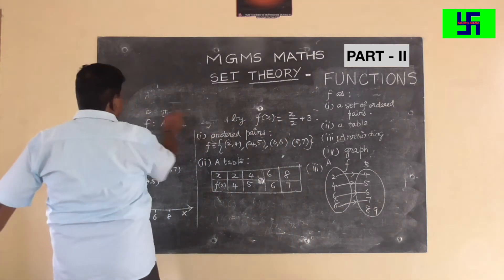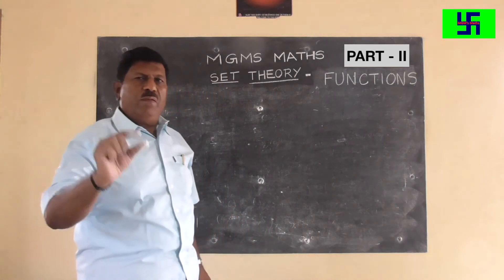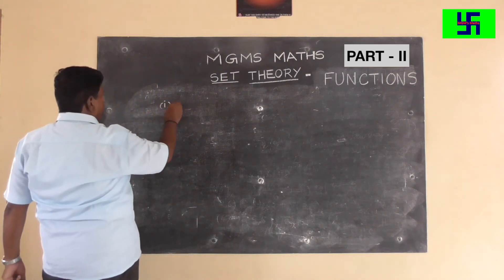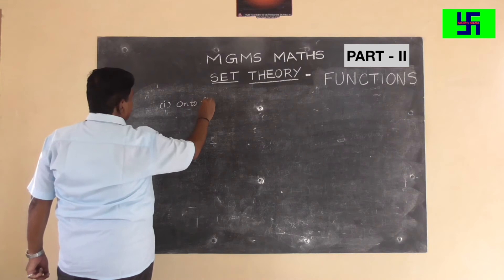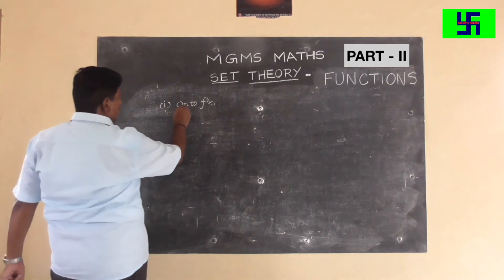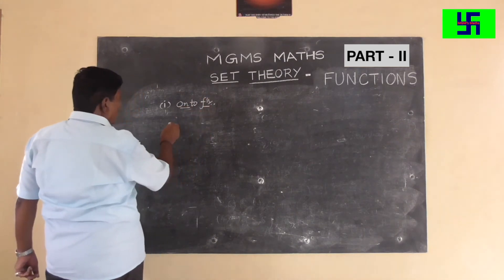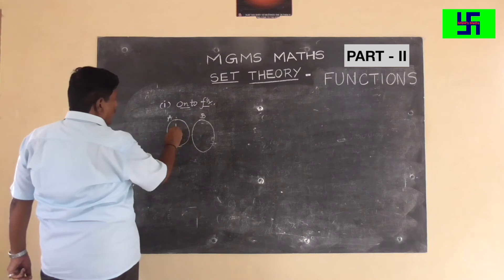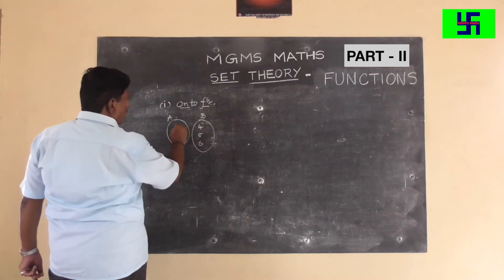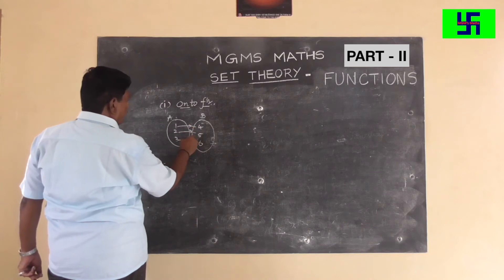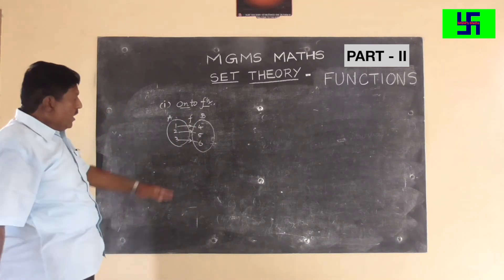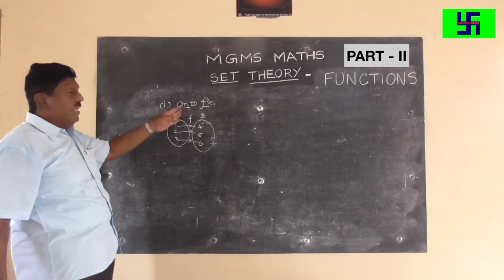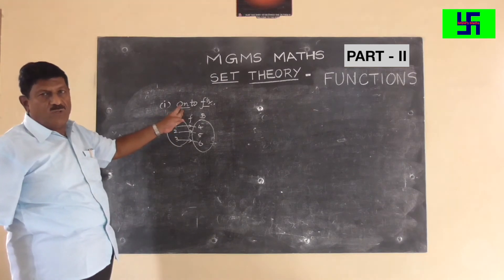Now, what are the types of functions? First, onto functions. You see there are two sets. All elements of set A are mapped, and all elements of set B have pre-images in set A. If all elements of set B have pre-images in set A, then it is called an onto function.